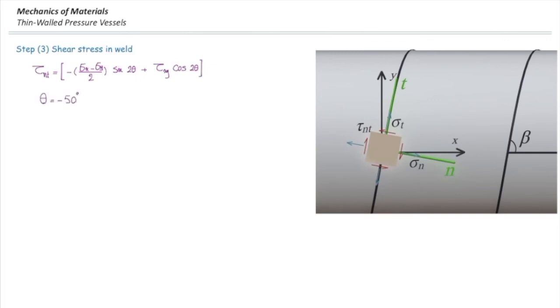Now, we plug the values with the theta that we used in the previous case. And once we do that and factor out p, we get tau nt equals 7.39p.